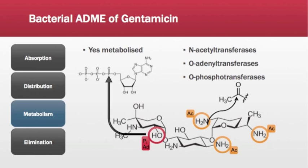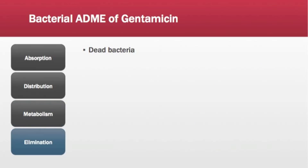In bacteria, gentamicin can undergo phosphorylation, adenylylation, or acetylation by bacterial N-acetyltransferases, O-adenyltransferases, and O-phosphotransferases. Any of these actions will inactivate the molecule by rendering it unable to stop bacterial ribosomal activity. While bacteria can eliminate gentamicin, the hope is that we will stop bacterial growth and have dead bacteria.